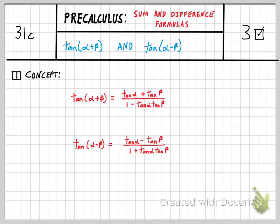Pre-calculus concept 31C is the last two sum and difference formulas. We saw two for sine, two for cosine, and these two are for tangent.